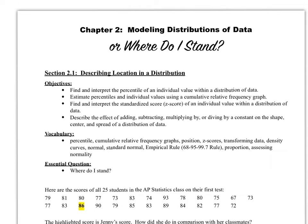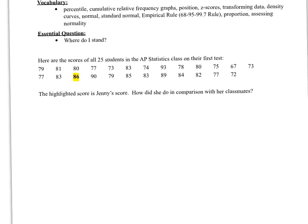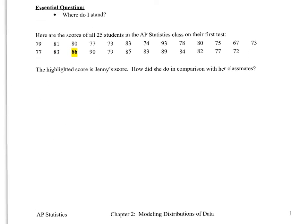Our vocabulary includes percentile, cumulative relative frequency graphs — also called ogives — position, z-scores, transforming data, density curves, normal, standard normal, the empirical rule, proportion, and assessing normality. There's a lot going on in this chapter. It's a perfect chapter to follow Chapter 1 where we were analyzing data, and we're going to continue analyzing data with this next example. Let's go ahead and get started.